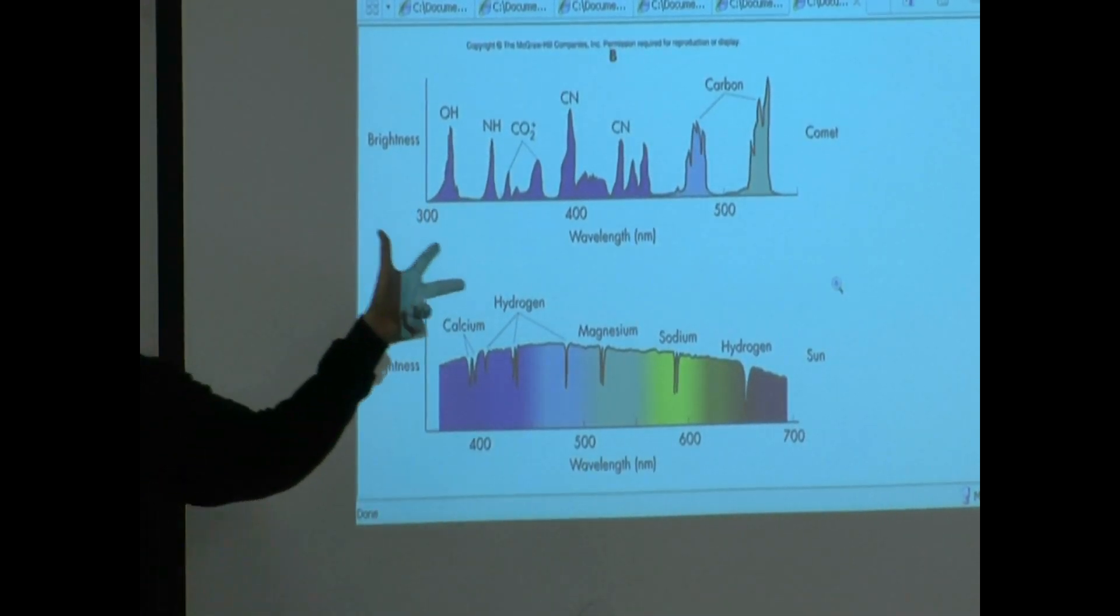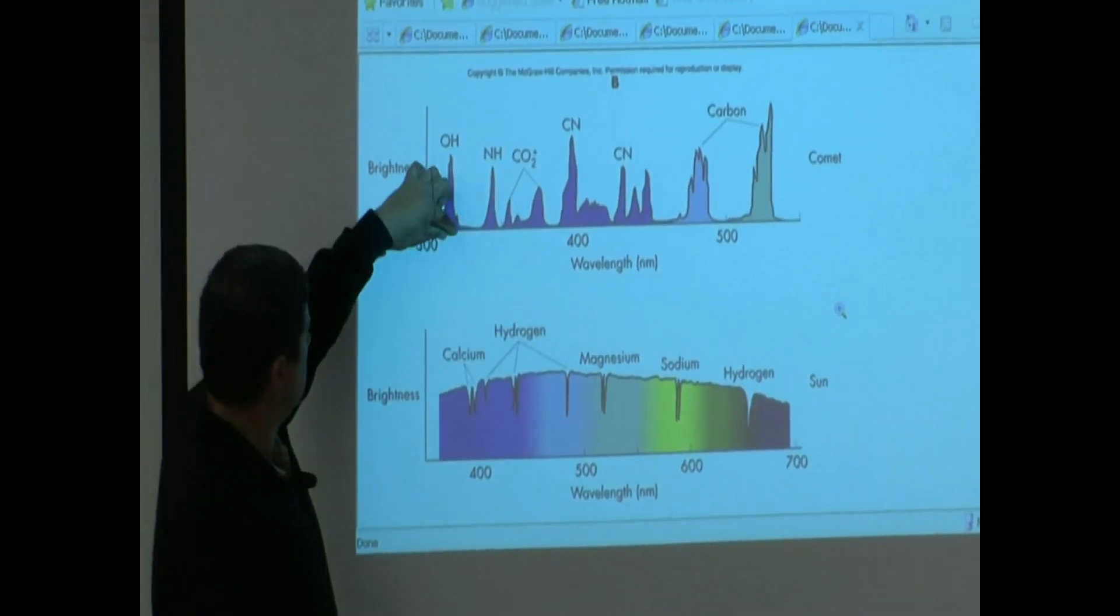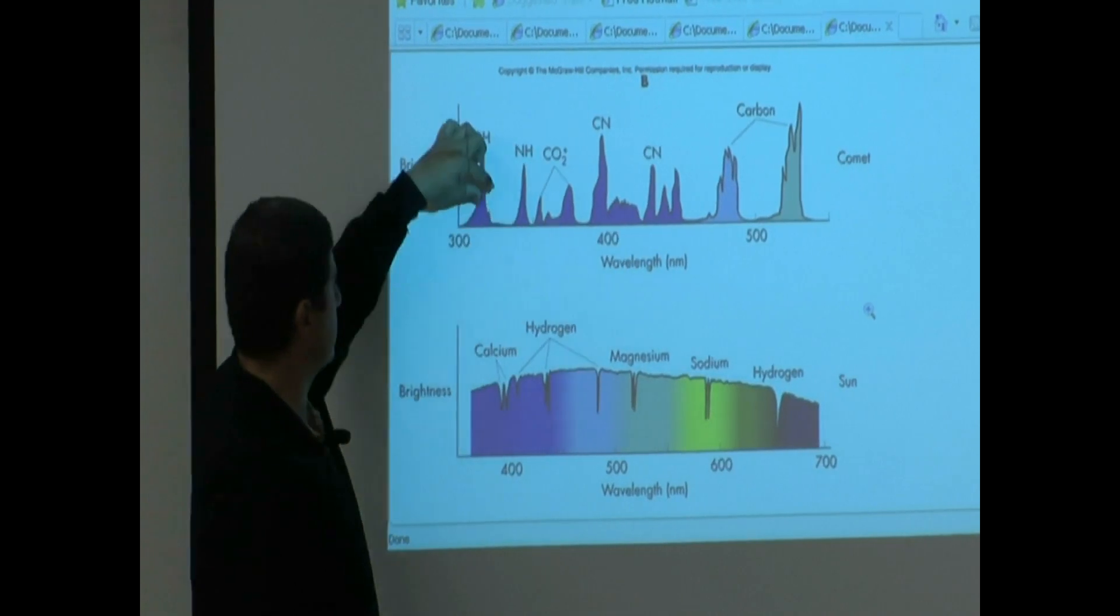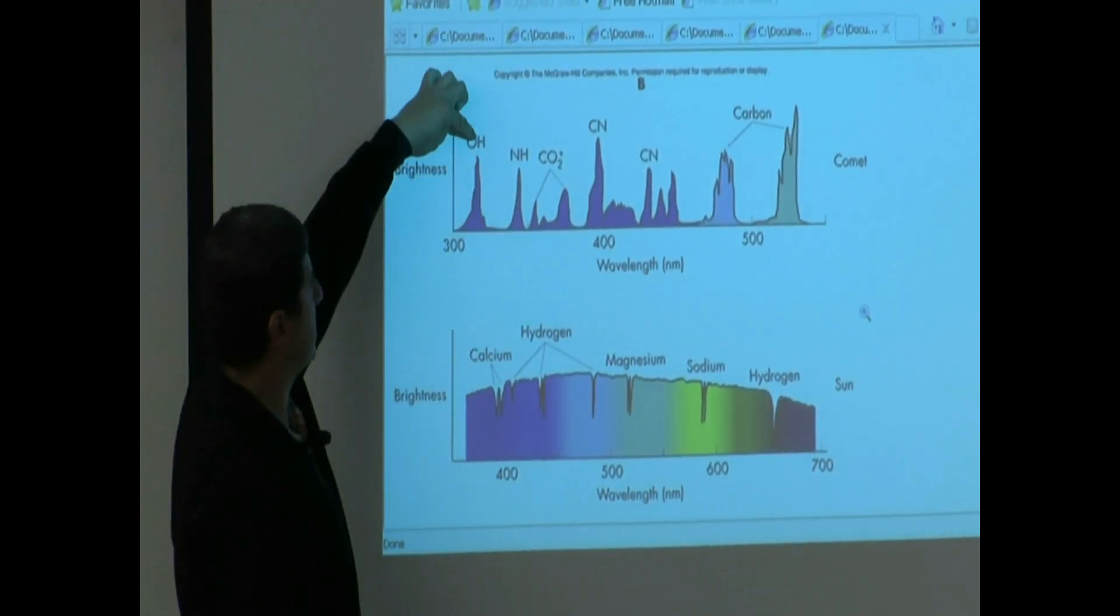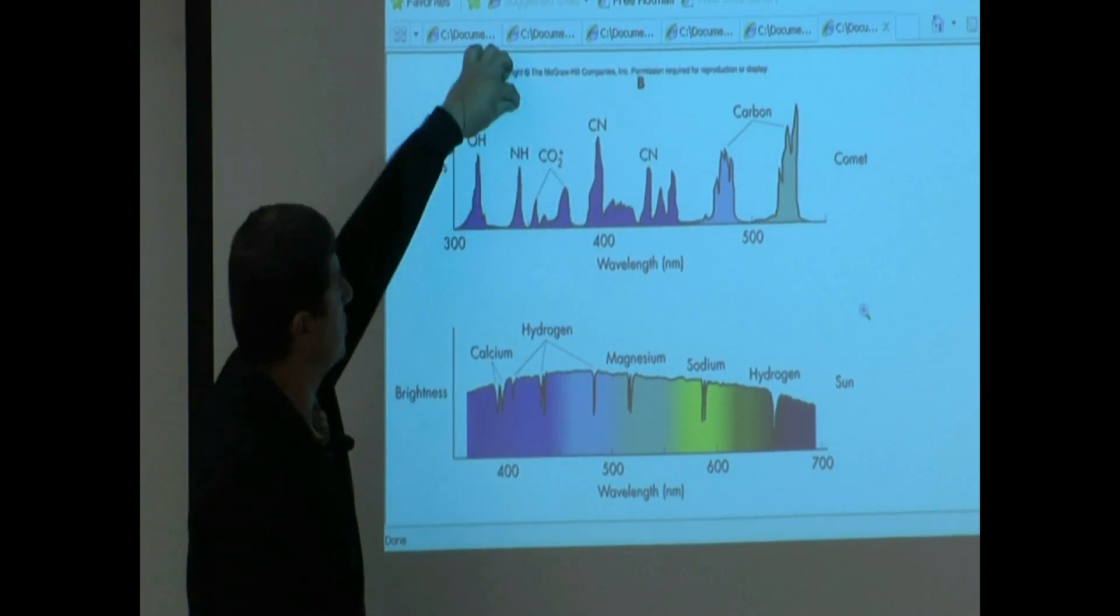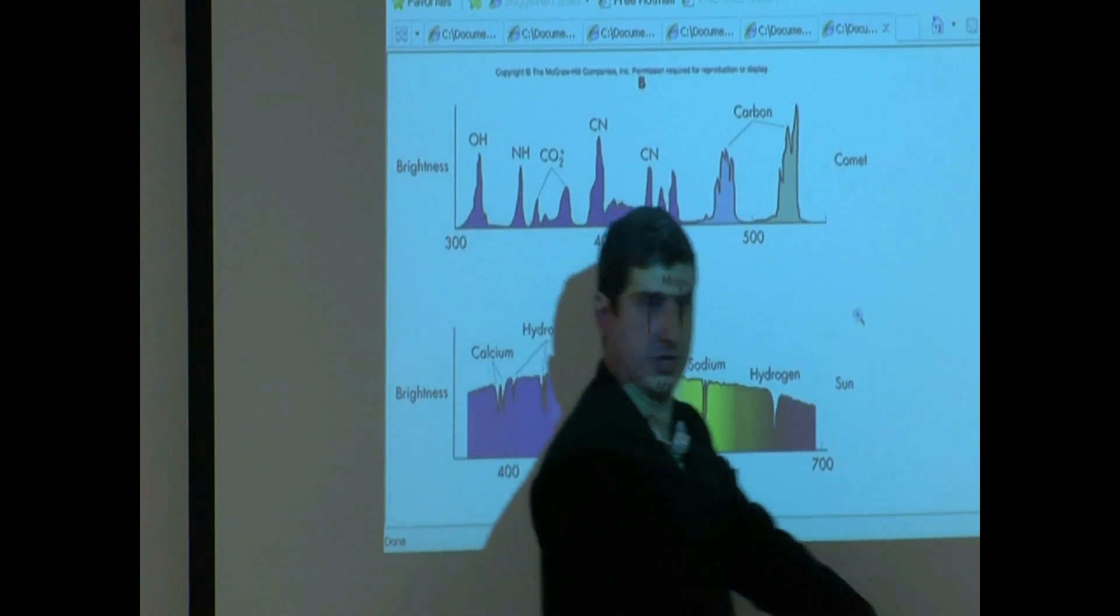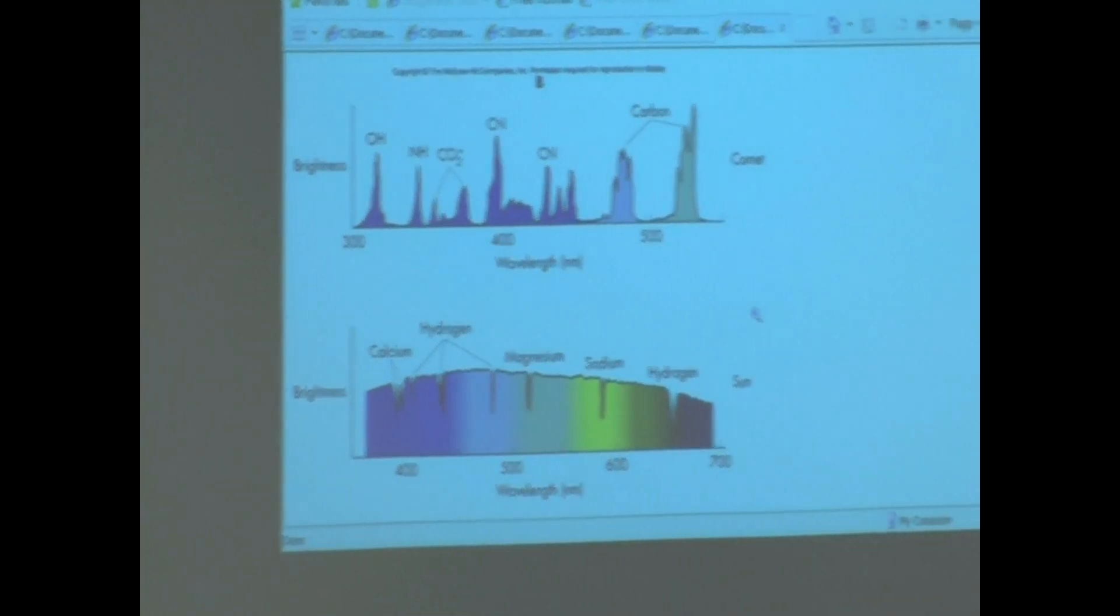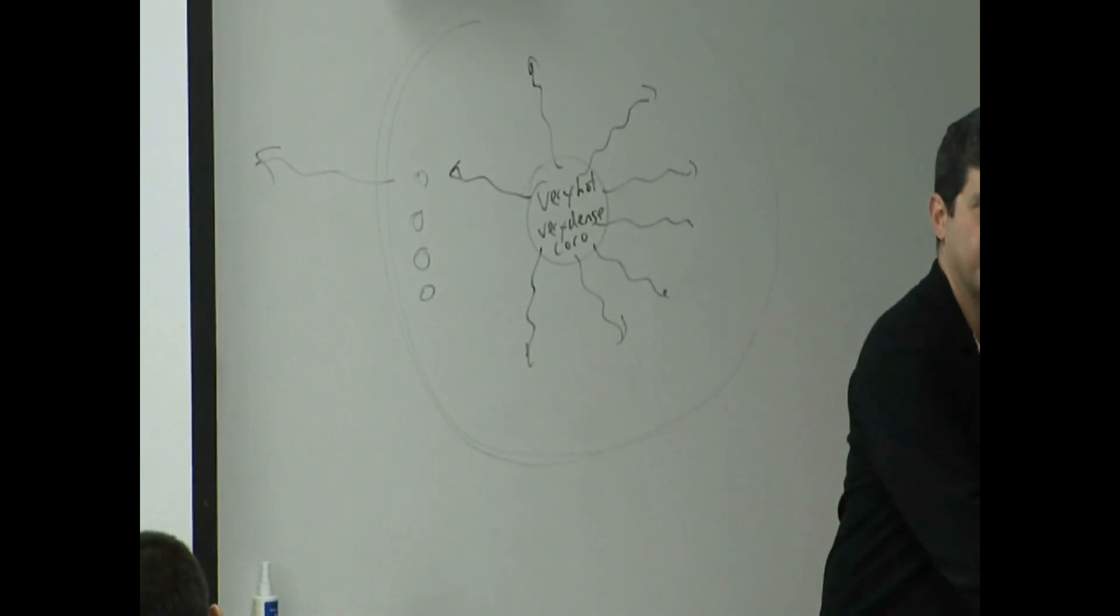Is it absorption or emission spectra? Comet. The atmosphere of a comet, or also known as its coma, emission - it has OH, NH, CO2, emission, emission. You see? So is comet acting more like a gas, or is it acting more like a star? Gas.